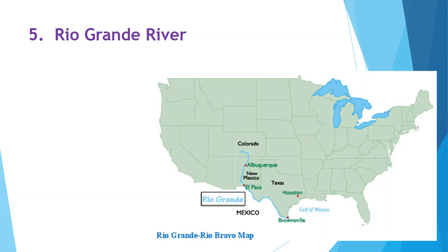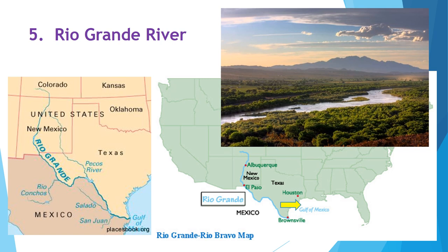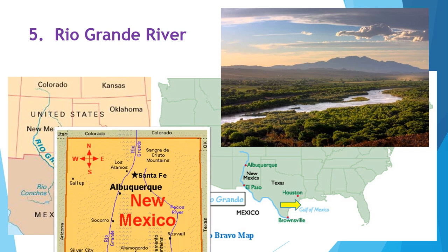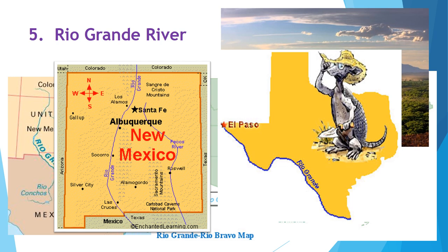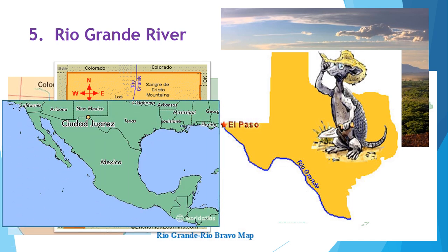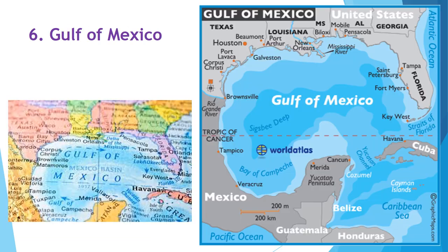The Rio Grande River forms part of the United States border with Mexico and flows into the Gulf of Mexico. Its name in Spanish literally translates to 'big river.' Cities along the Rio Grande include Albuquerque, New Mexico; El Paso, Texas; and Juarez, a prominent city on the Mexican side of the river. The Rio Grande River is an important body of water that transports products into the Gulf of Mexico.